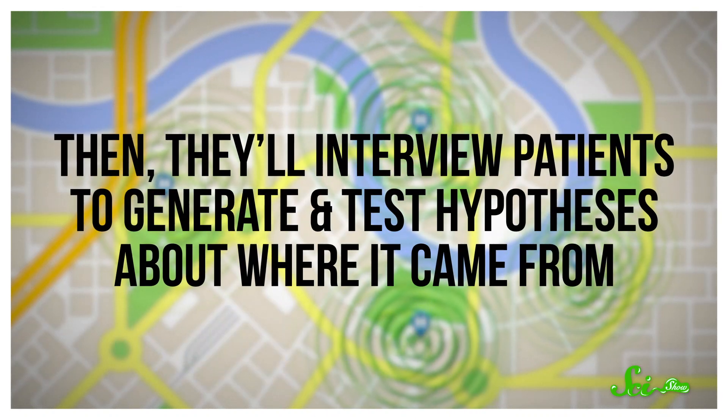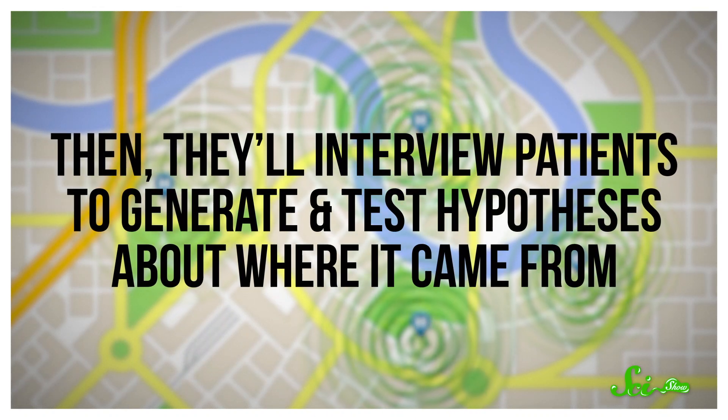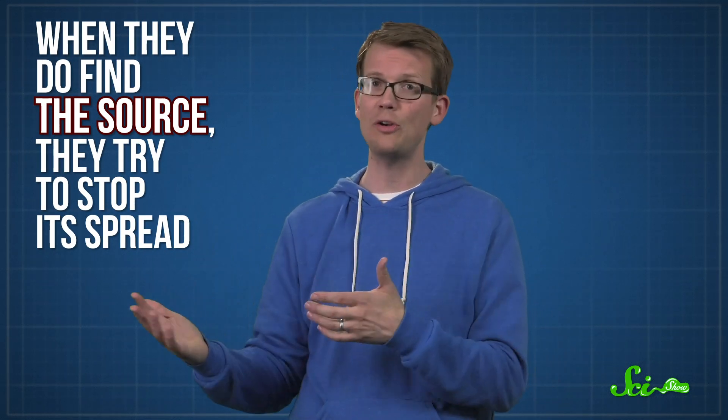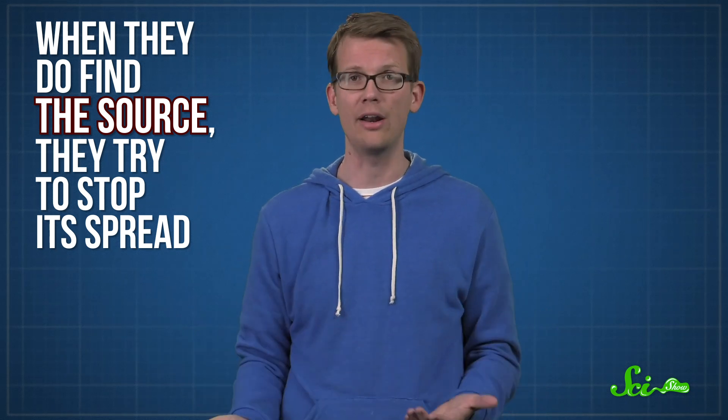Then they'll interview patients to generate and test hypotheses about where it came from. Like, if most of those patients ate the same brand of alfalfa sprouts, they'll go swab that produce packaging facility to look for the microbe. When they do find the source, they try to stop its spread. The state health agency may shut down a restaurant, or the Food and Drug Administration may recall a product.